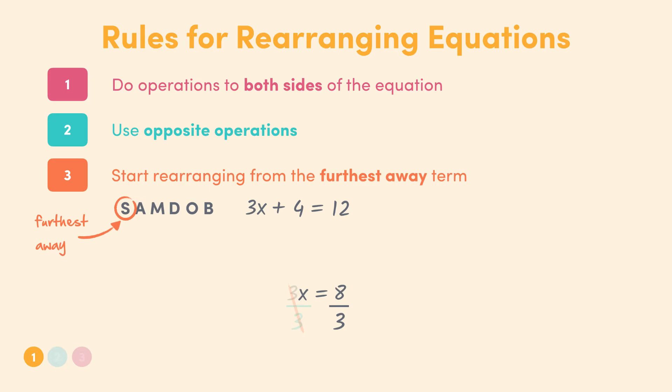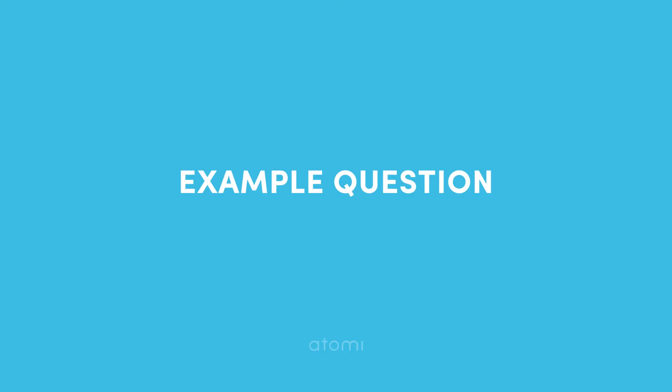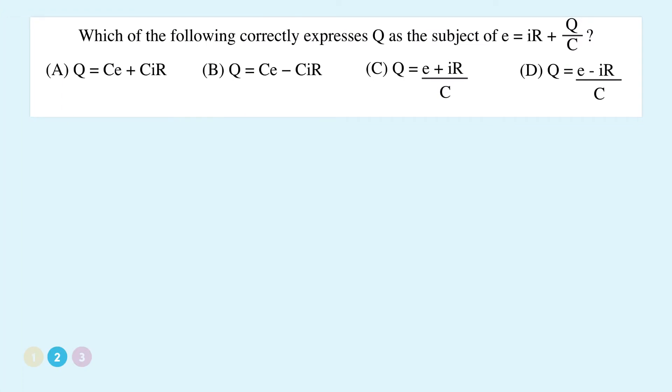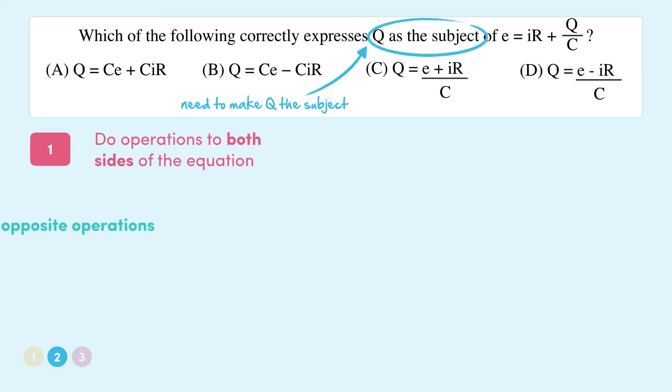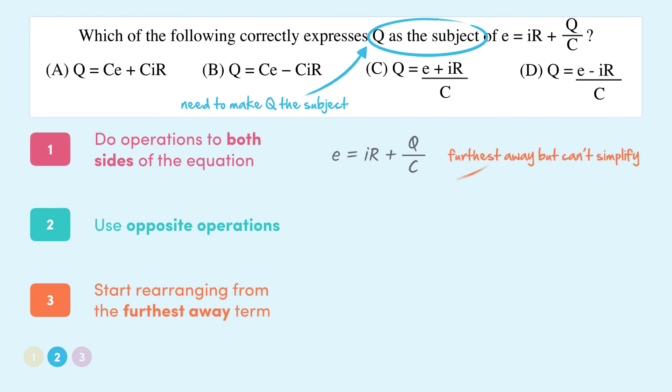Okay, so now that we have some rules for rearranging equations, let's apply them to an exam style question. Which of the following correctly expresses Q as the subject of E equals IR plus Q divided by C? So the question is asking us to make Q the subject of this equation. What this means is that we need to put Q on one side of the equation and all the other terms on the other side of the equation. So to begin, we know we start by dealing with the term which is furthest away from Q. In this case it's E because it's been added to the equation and it's on the other side of the equals sign, but we can't simplify E any further.